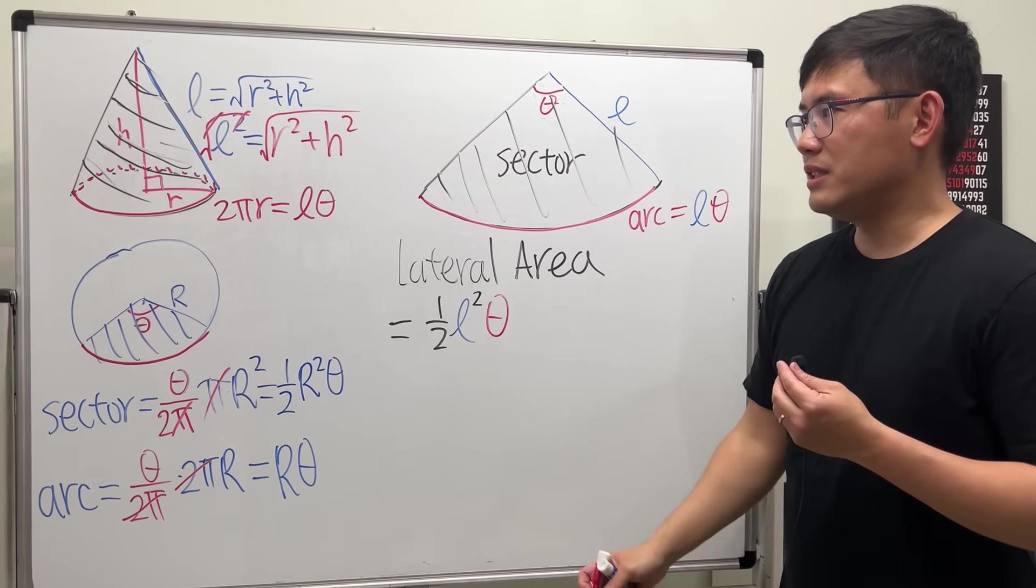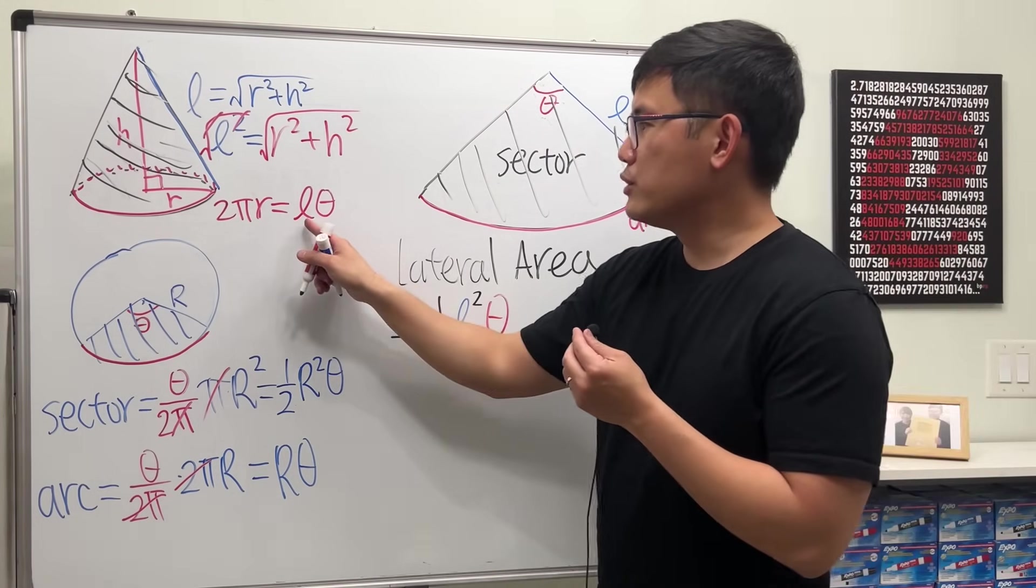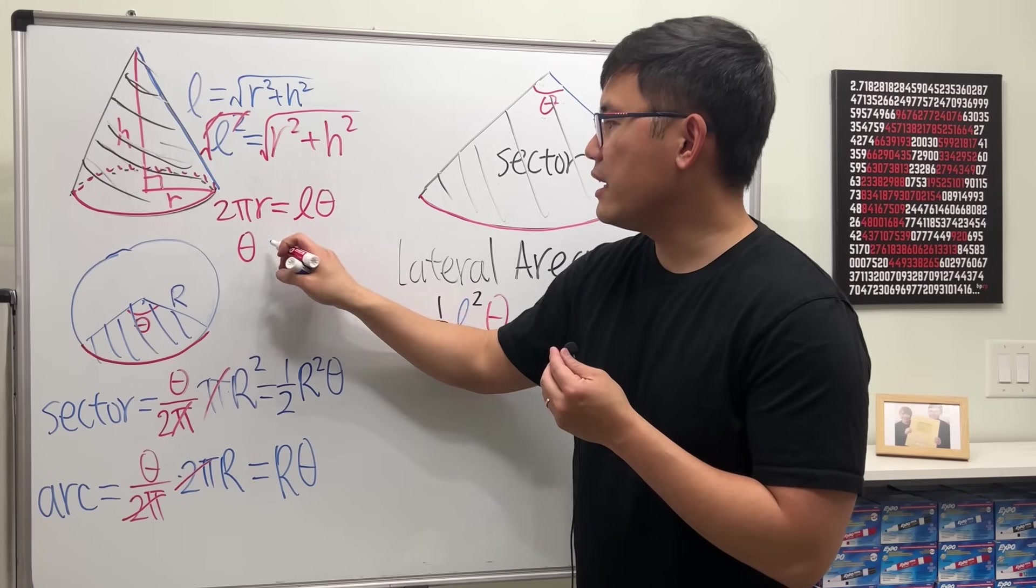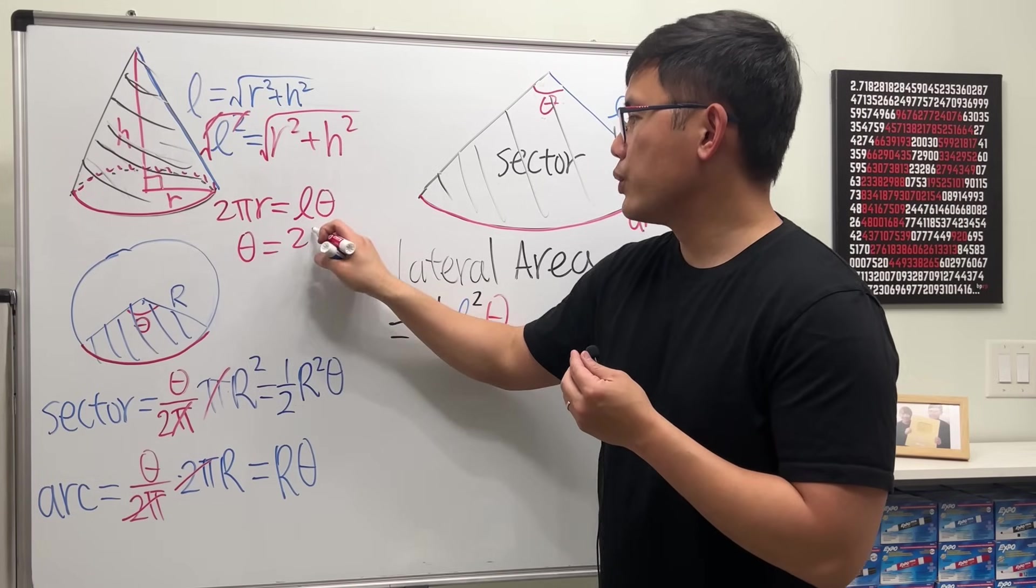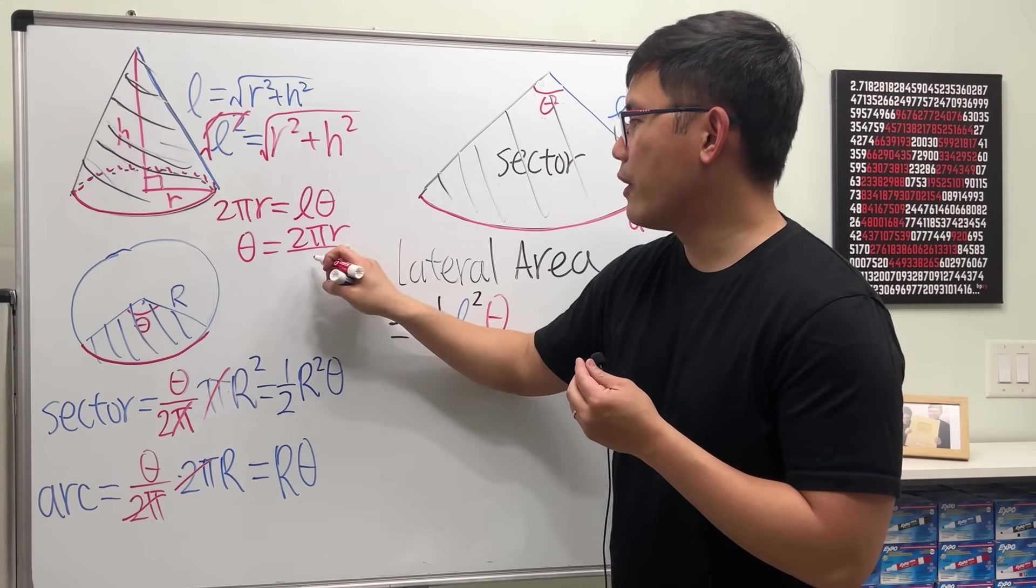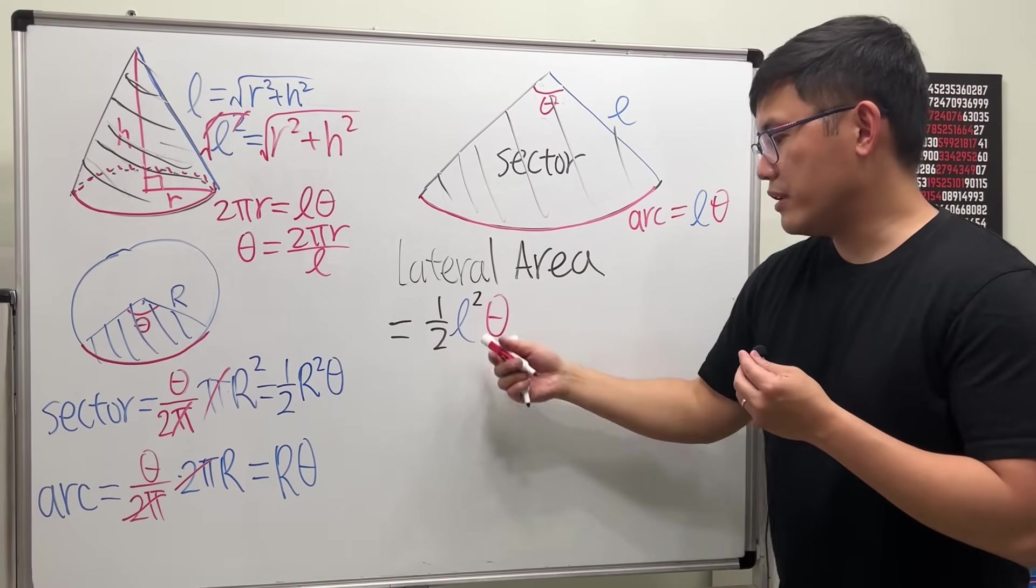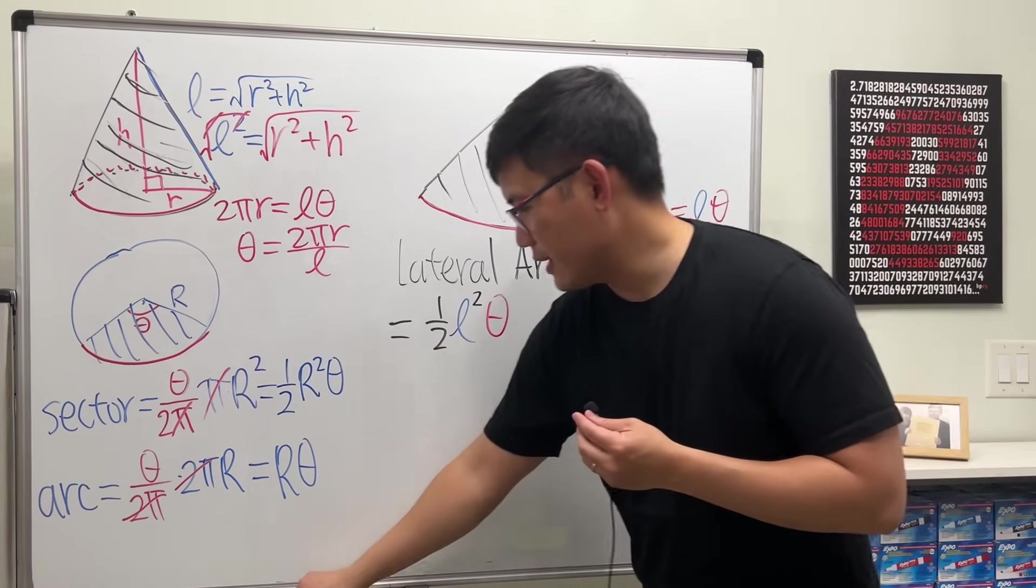Suppose we do want to see the theta, then we can just divide L on both sides and say theta equals 2 pi r over L. And then we can just plug in this right here and work our formula. Very nice, huh?